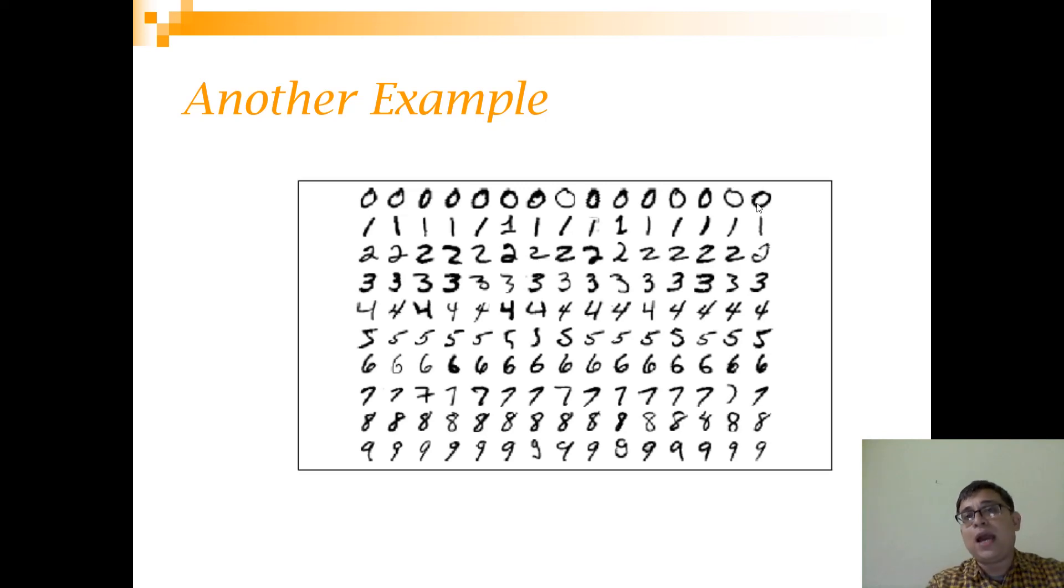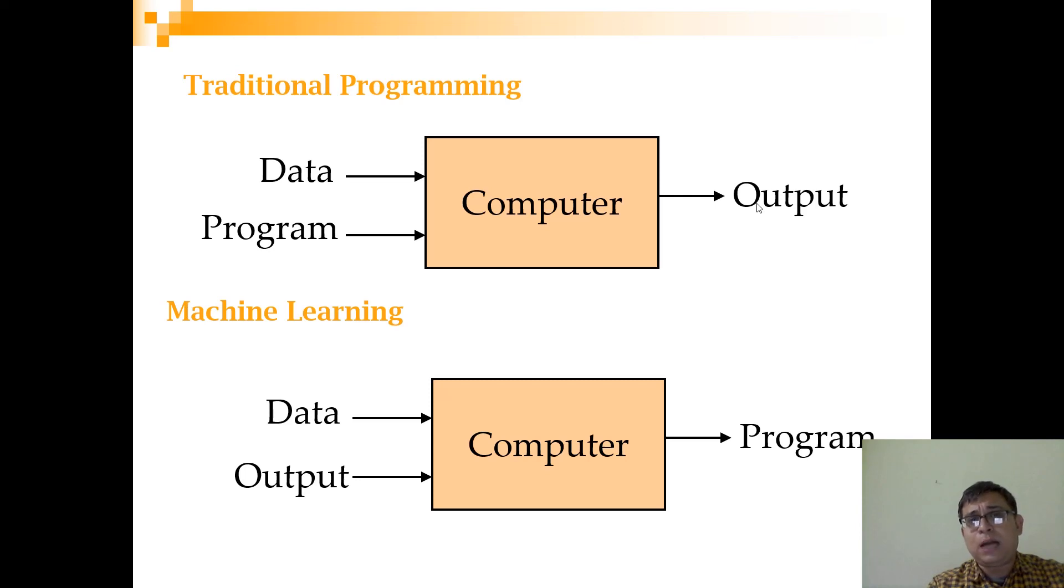Here is one particular example where a machine learning program is contrasted with a traditional program. A traditional program will have data and the program is already there in the computer and you get the output. A typical example will be that you give the amount that is there in a particular account in a bank and it calculates what is the interest accrued for that particular account. There is a specific set of if-then-else rules where you try to find out what is the type of account—whether it is a savings account, a current account, or a fixed deposit. You also calculate the tenure and that way the interest is calculated.